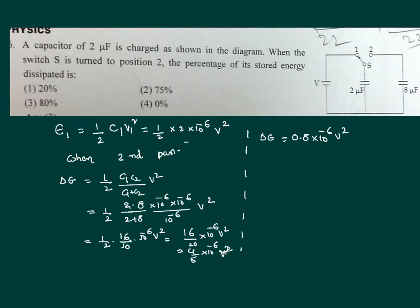It can be noticed that when compared with the initial energy of 10 power minus 6, final energy is 0.8 into 10 power minus 6. The energy dissipated is the difference between these two. Its value is 0.8, that is 80 percent of the initial energy.